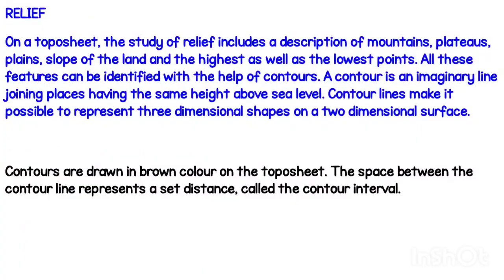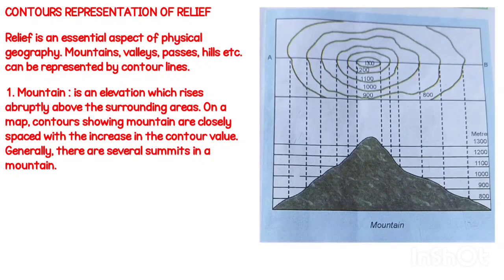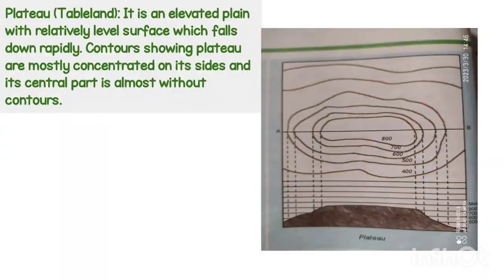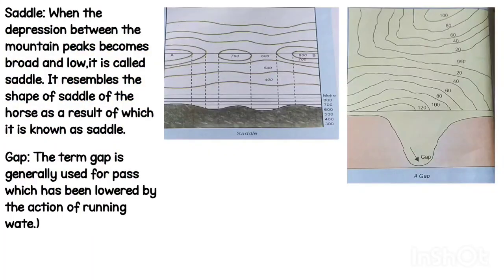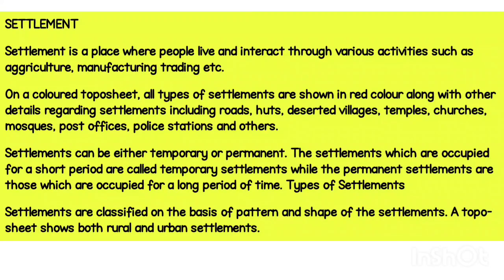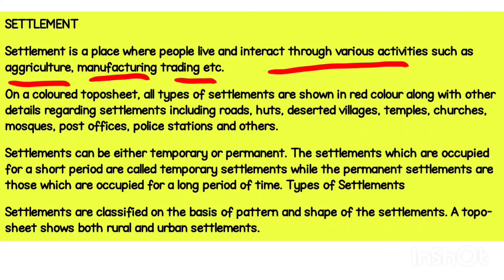Today our discussion topic is settlement. A settlement is a place where people live and interact through various activities such as agriculture, manufacturing, trading, etc. On our topographical map, all types of settlements are shown in red, along with details regarding settlement including road, hamlet, desert village, temple, churches, mosque, post office, railway, police stations, and others. Settlement is part of the cultural features, or man-made features.